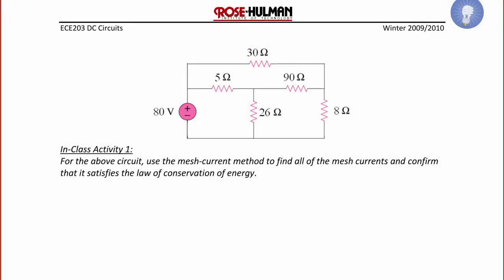In class activity one, for the above circuit, use the mesh current method to find all the mesh currents and confirm that it satisfies the law of conservation of energy. The first thing we do is label all of the currents clockwise: I1, I2, and I3. Next, label the polarities on each of the resistors with respect to the current mesh current. For mesh 1, the 5 ohm resistor is positive on the left, minus on the right, and the 26 ohm is positive on the top, negative on the bottom — drawn so that the resistors obey the passive sign convention and always drop voltage with respect to I1.